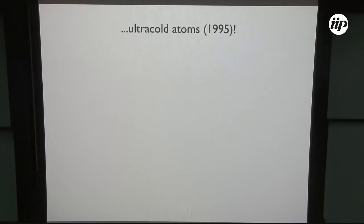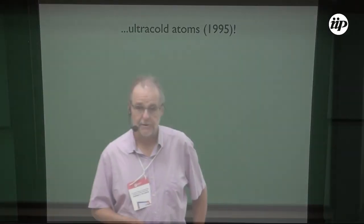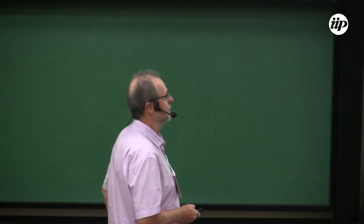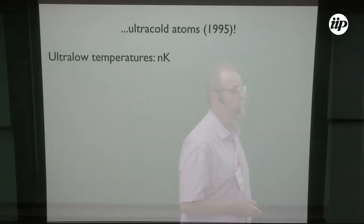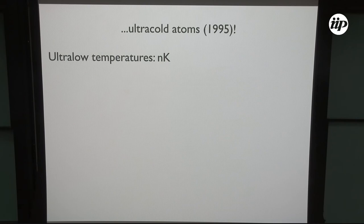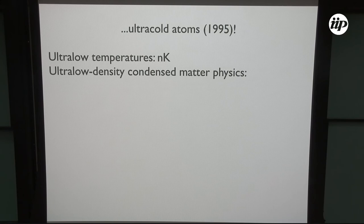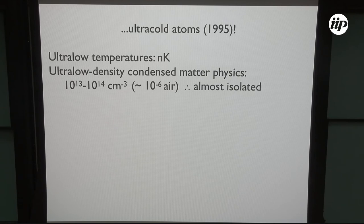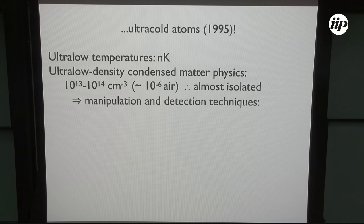The picture changed quite a lot in 1995 with the possibility of having ultra-cold atoms. With those, you can reach ultra-low temperatures on the scale of nano-Kelvin. You can work with ultra-low density condensed matter physics, at a density of 10¹³ to 10¹⁴ — about 10⁻⁶ the density of air — so the atoms are almost isolated and prone to manipulation and detection.